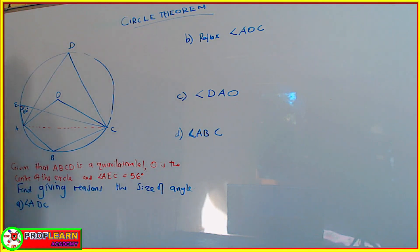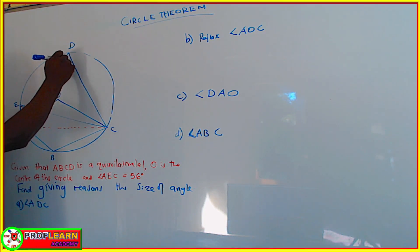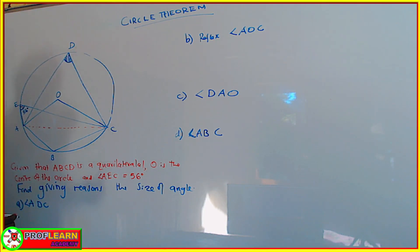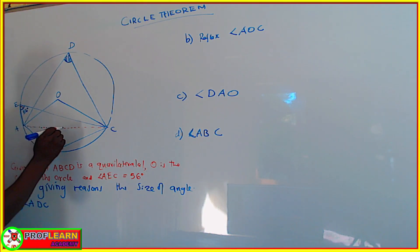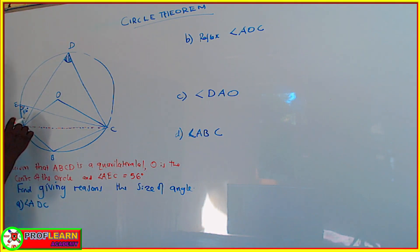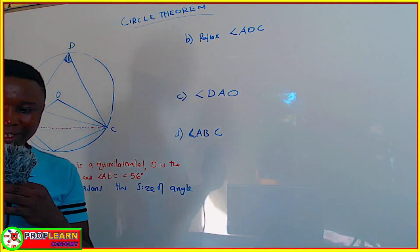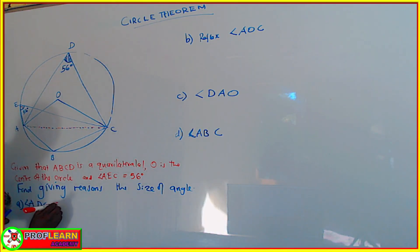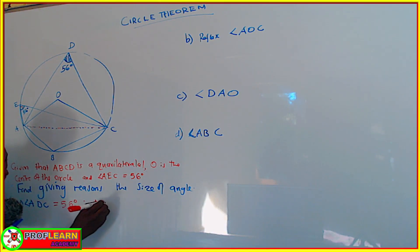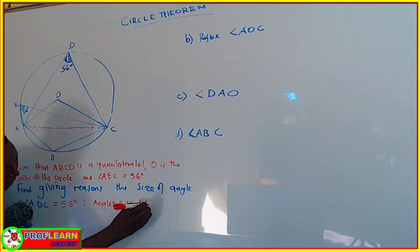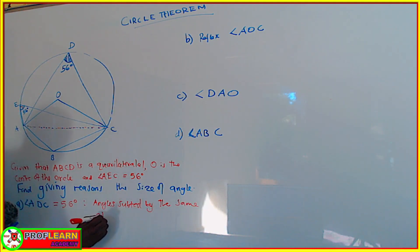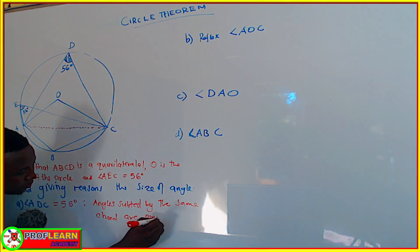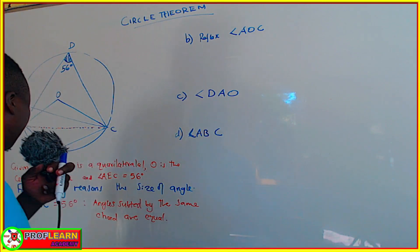We are supposed to find angle ADC. This angle is at this particular point. Angle ACD is also originating from the same chord AC. So meaning that if this is 56 degrees, angles subtended by the same chord are always equal, so this one is also 56 degrees. We will say this is equal to 56 degrees. Reason: angles subtended by the same chord are equal.